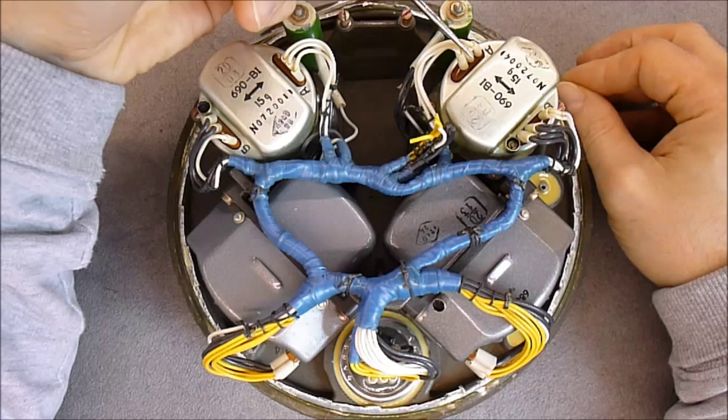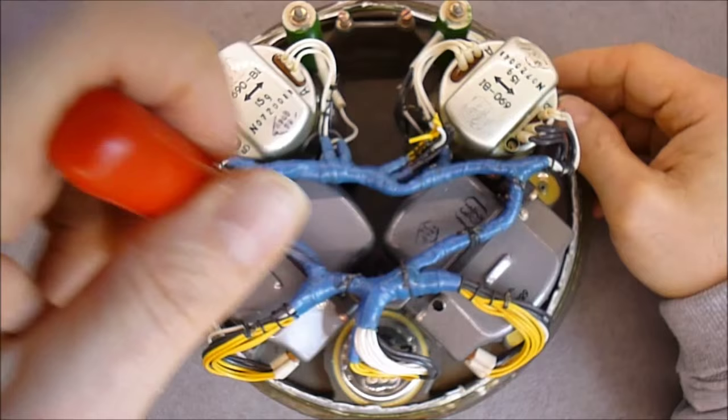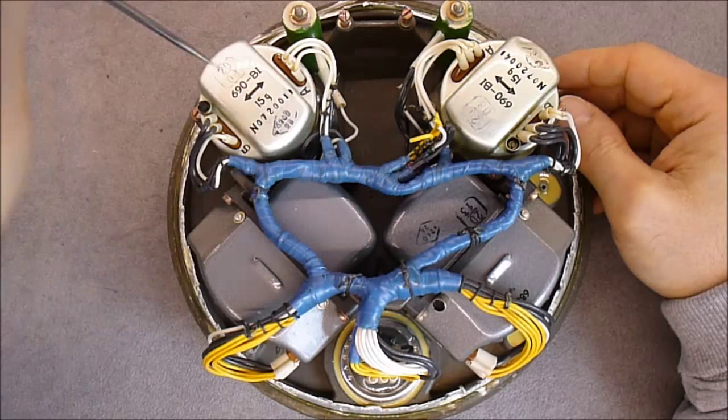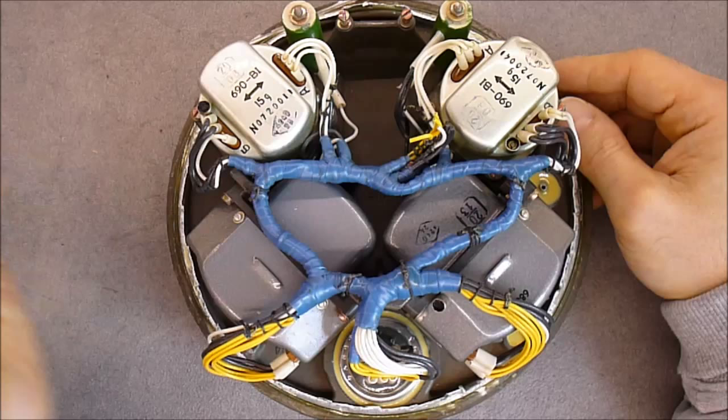I believe these are gyroscopes, single axis gyroscopes. It should be mounted in XYZ axis, and two accelerometers in two axis, like so, according to the arrows on it.